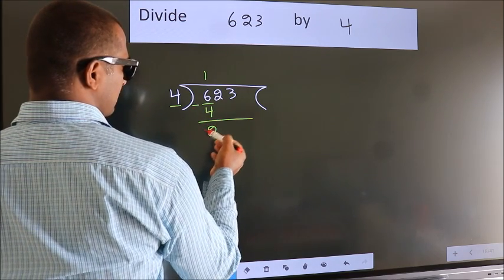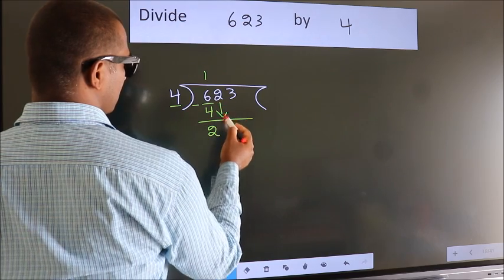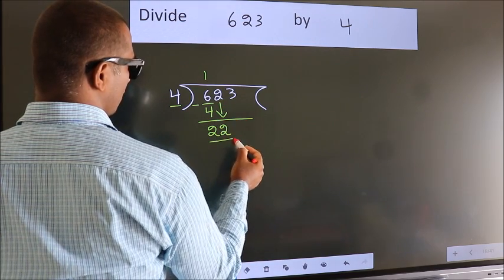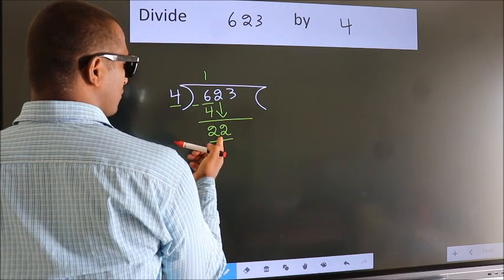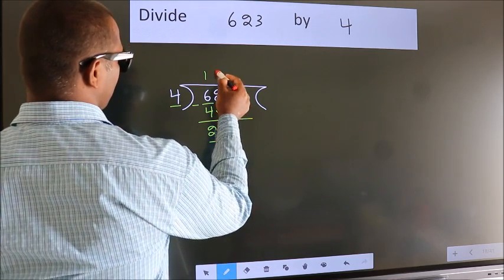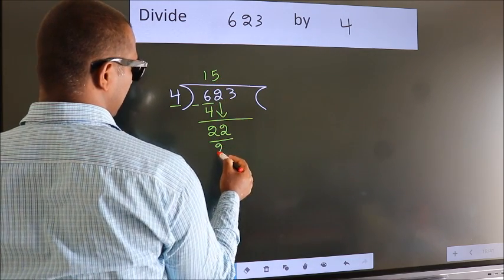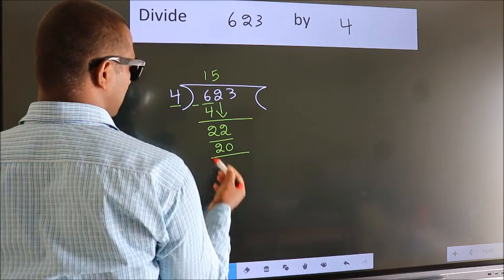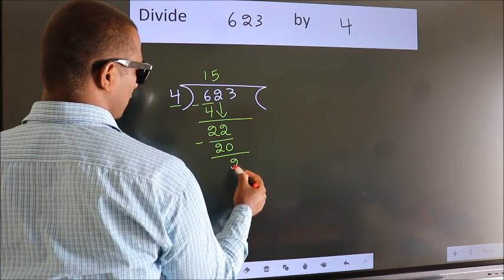After this, bring down the beside number. So, 2 down. So, 22. A number close to 22 in the 4 table is 4 5s 20. Now, we subtract. We get 2.